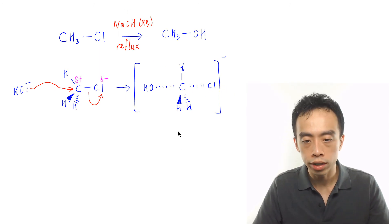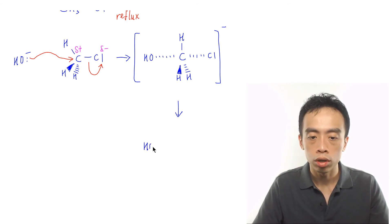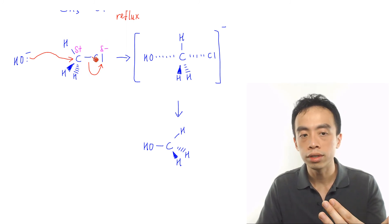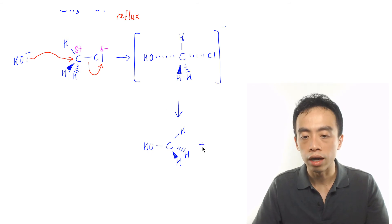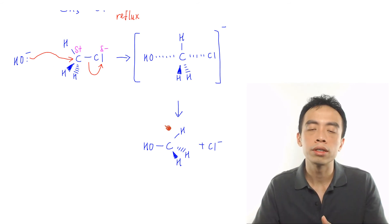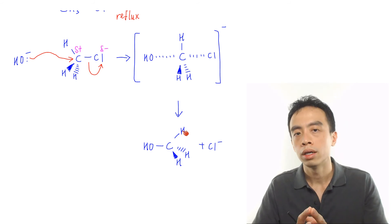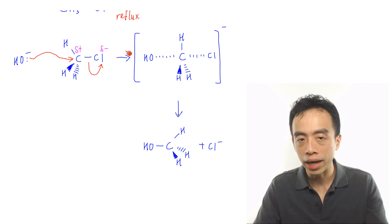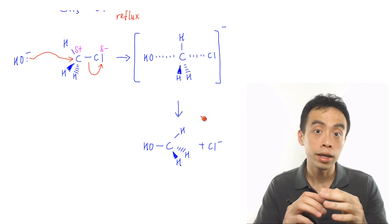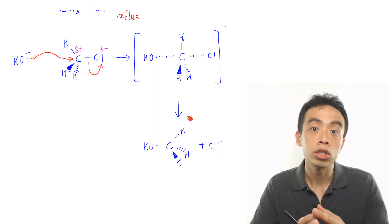From the transition state we move to the product. The OH is on the left, the carbon is in the center, and the remaining groups flip toward the right. The C–Cl bond breaks and both electrons go to chlorine, giving chloride as a byproduct. Note: in SN2 mechanism, because it is a one-step reaction, it is not necessary to label the step as 'slow.' Do not write 'slow' and 'fast' steps, as that would imply a two-step mechanism — which is wrong. This is a one-step process.